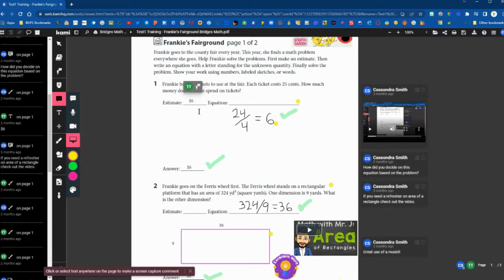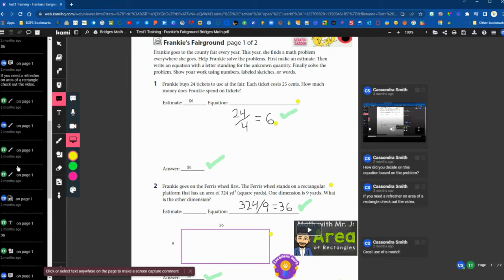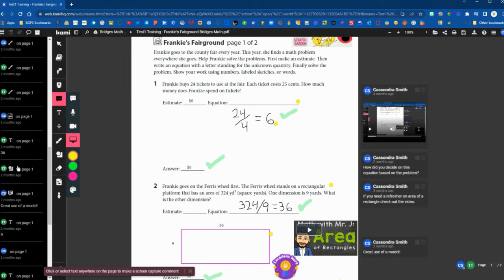You can also hover over the annotations directly on the page and it will bring up the initials of whoever added that in the different colors. We have the TT initials for our test training account here and then the CS for the teacher account.